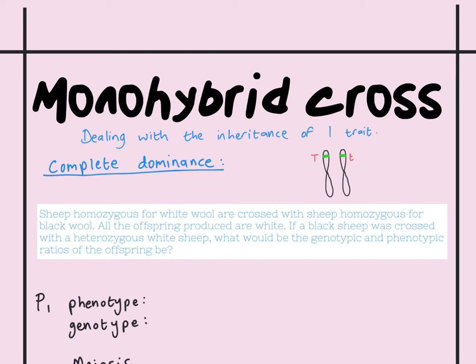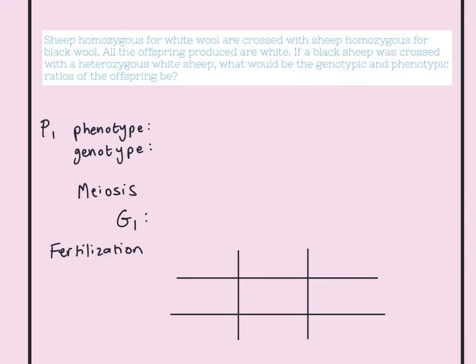Let's look at an example of complete dominance using a monohybrid cross. When doing any genetics question in a matric paper, read the question exceptionally carefully — this is where you can find vital clues. The question states: sheep homozygous for white wool are crossed with sheep homozygous for black wool. All genetic crosses use contrasting characteristics — black and white, tall and short — and these are either/or traits.